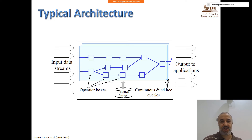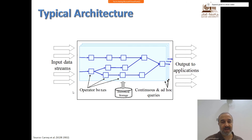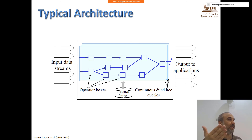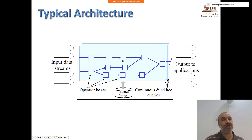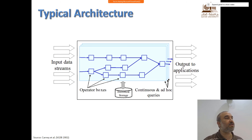A quick look at the architecture. We have input data streams — they might be more than one stream — multiple streams in parallel. Then you do processing in what we call operator boxes. You can do any processing in each of these boxes. Eventually you might need to store some data. There are queries, and then there will be output to the applications — whether stored or directly delivered to the application that will provide decisions based on this data.